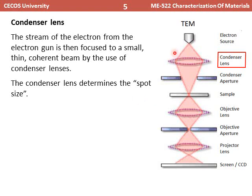The next part is the condenser lens. The stream of electrons from the electron gun is focused to a small, thin, coherent beam using the condenser lens, which is an electromagnetic lens. The condenser lens determines and controls the spot size, which is very similar to its function in scanning electron microscopy.